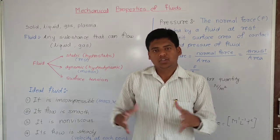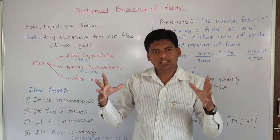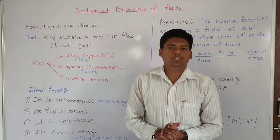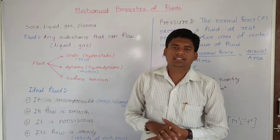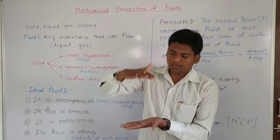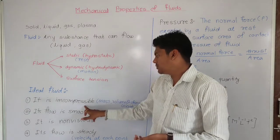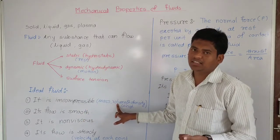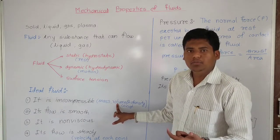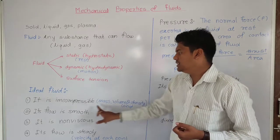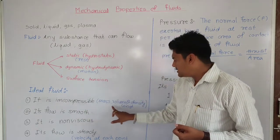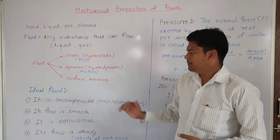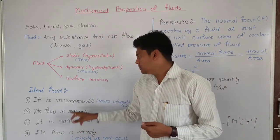The ideal fluid is incompressible — meaning if you press it, the shape and size do not change. In an incompressible fluid, mass and volume remain constant. Mass divided by volume gives density, which is also constant. In the ideal fluid concept, mass, volume, and density all remain constant.